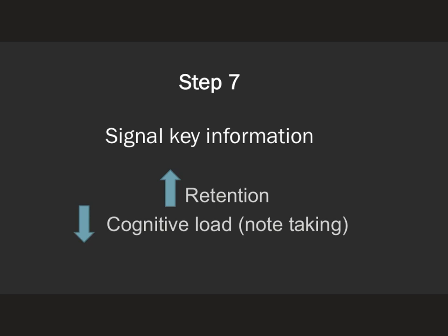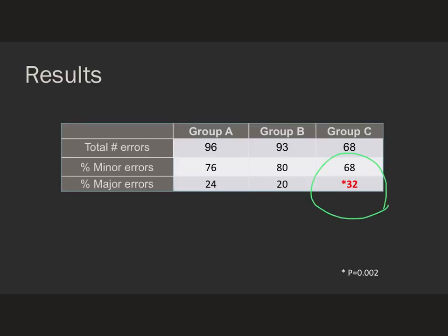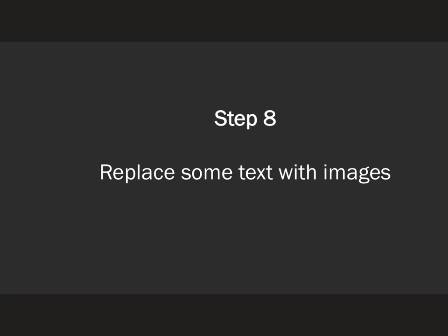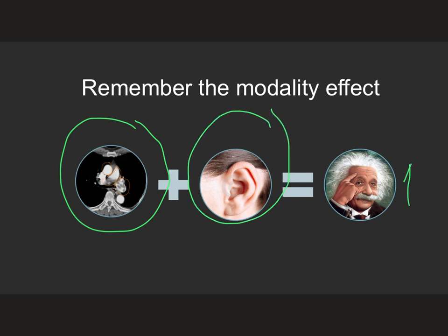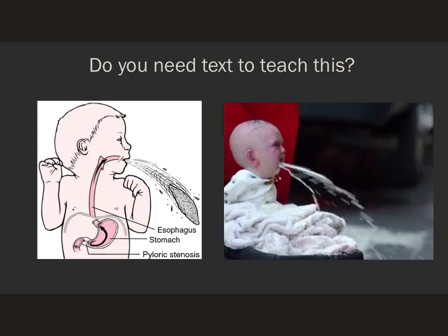You can signal key information verbally by speaking a little louder about an important point, or saying 'the most important thing you need to remember is...' or 'if you forget this, your patients will die' or 'this is very likely to be in the exam' — that one works quite well. Or you can do it visually on an image or a table by putting something in a different color or highlighting it. Whenever you can, replace text with images — not just medical images or radiographs, but also visual images that will help people remember. This is using the modality effect: if we combine an image with talking about that image, we markedly improve memorization of those facts by decreasing the cognitive load on working memory.